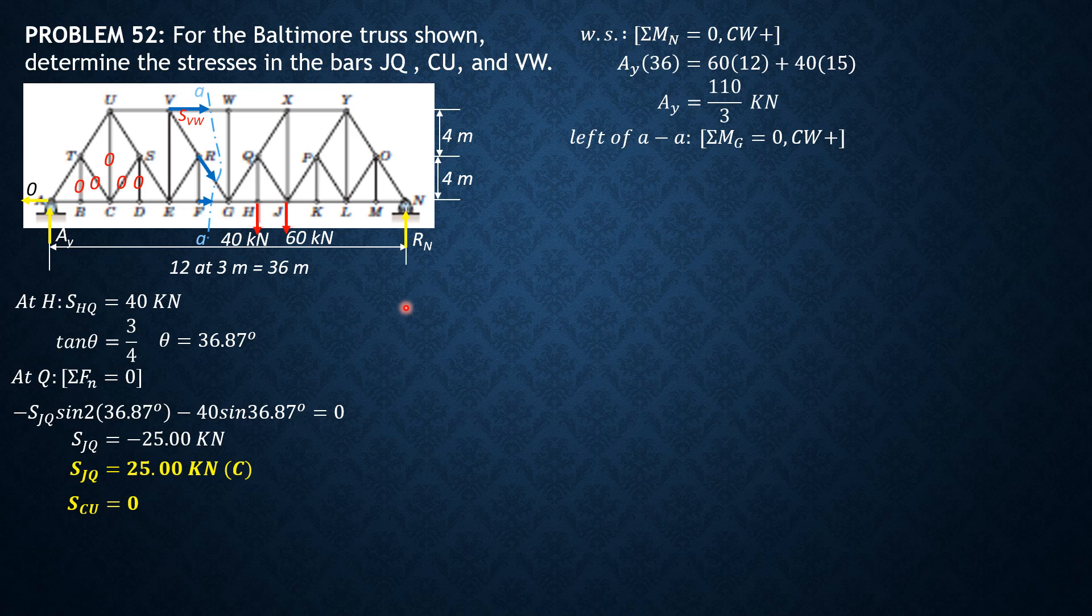Let's remove everything. We have SVW times 8 plus AY 110 over 3 times 18 equals 0. So SVW equals negative 82.5 or SVW is 82.5 kilonewtons compression. That's it for the solution to this problem.